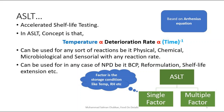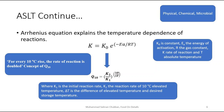ASLT is nothing but accelerated shelf life testing. ASLT derives its concept from the Arrhenius equation, which will be explained in the next slides. The main concept of ASLT is that a rise in temperature increases the deterioration rate, which in turn reduces the time required for shelf life testing. This methodology can be used for any sort of reaction — physical, chemical, microbiological, or sensorial — with any sort of reaction rate. ASLT is also available in a multi-factor form where multiple factors such as temperature and RH come into play.